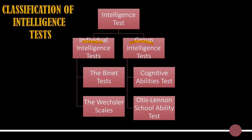Since many individuals can be assessed at the same time, the group intelligence test takes less time in assessing the individual's intelligence. The individual intelligence test can further be classified into two categories: the Binet test and the Wechsler scales. The group intelligence test can be further classified into the Cognitive Abilities Test and the Otis-Lennon School Ability Test.